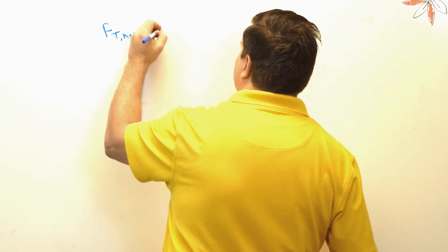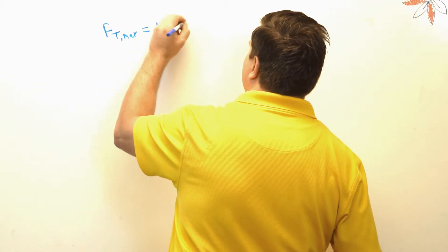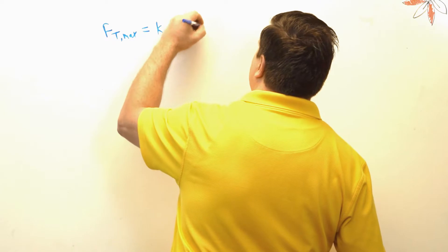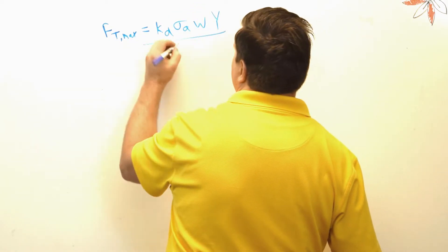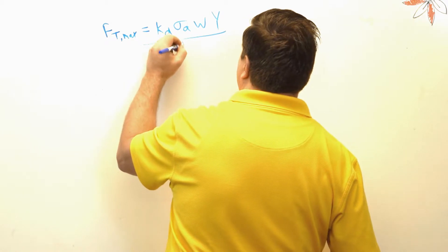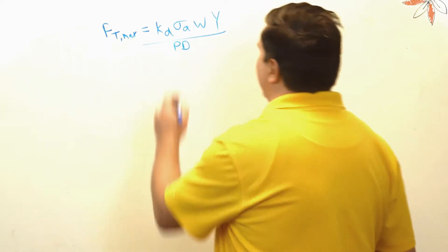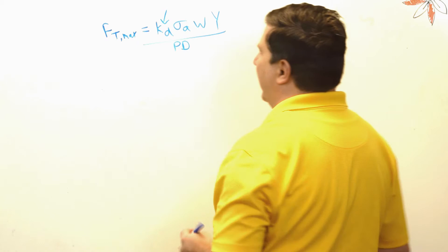And that is equal to: here's the constant kd times your allowable stress times your width and your Lewis form factor over your pitch diameter. So same formula, we just added this guy in.